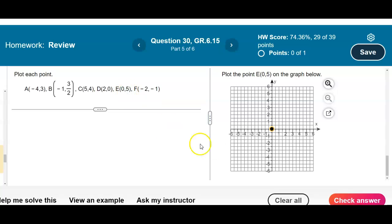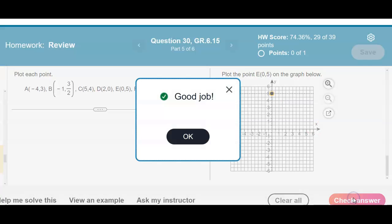Now we're going to graph 0, 5. So that means the first point 0 doesn't go either left or right. It stays right where it is. And the 5 now tells us to go up 5. So therefore that is our next point.